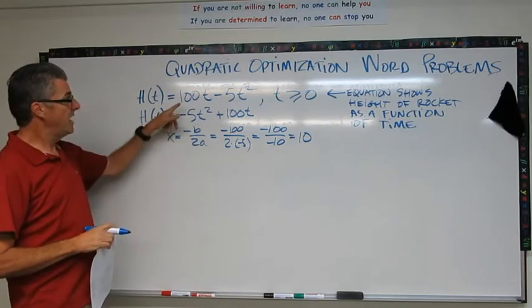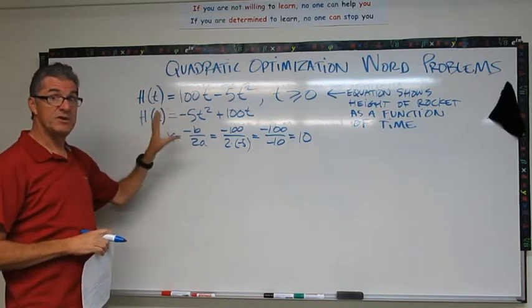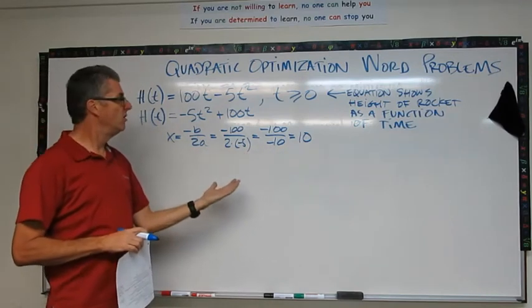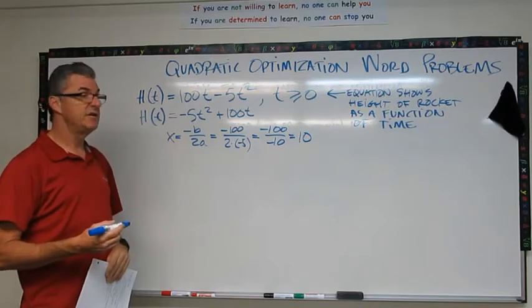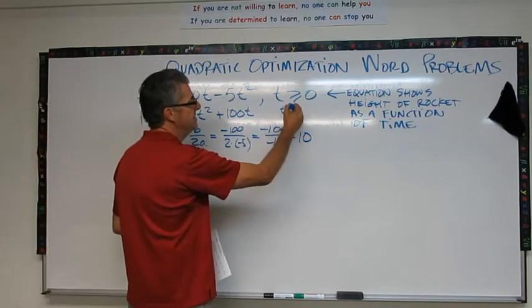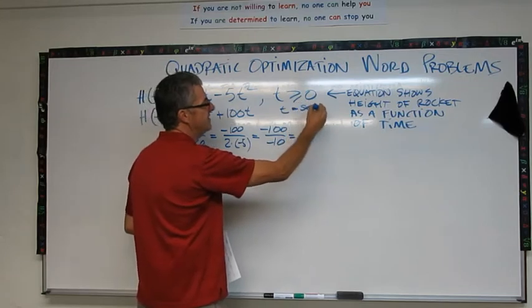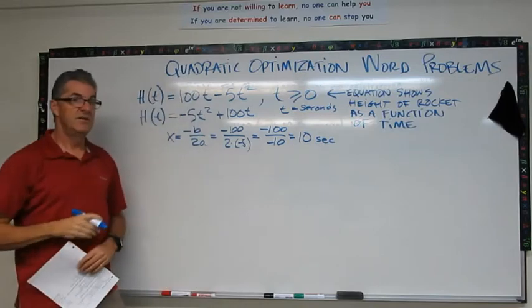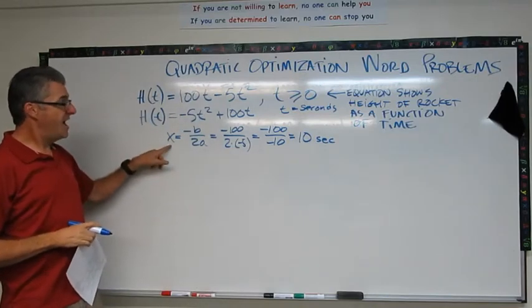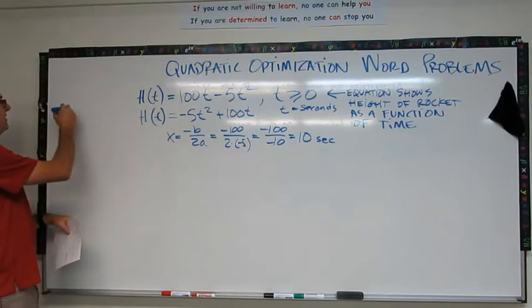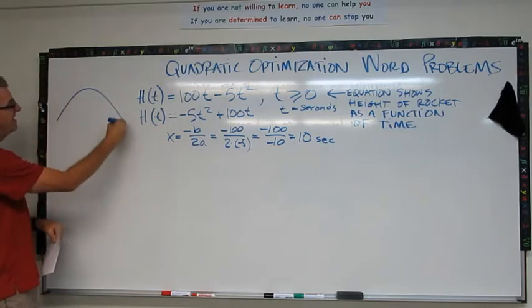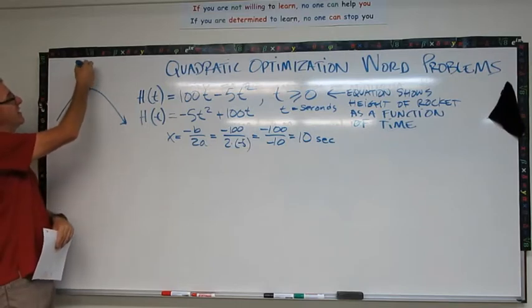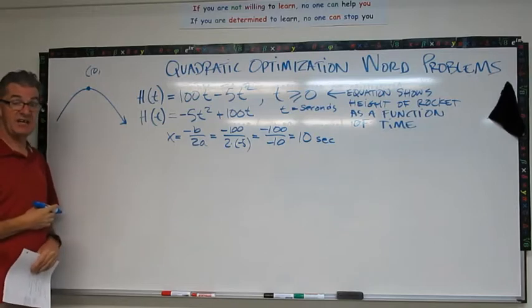Now, what does that 10 mean? Remember, we have a word problem here, so we have a real situation. So we have units on this. Now, I haven't told you what the units for t are. Very commonly, they're seconds. So I'm going to write here, t equals seconds. So I'm going to write 10 seconds right there. So what this tells us is that the x coordinate at the vertex, remember this rocket is going up and then down. So we found the x coordinate at the vertex. It's 10 for 10 seconds.